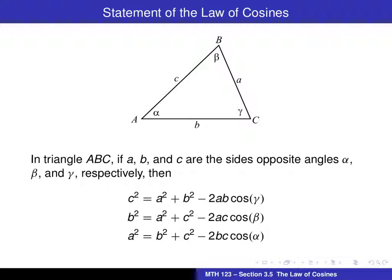So again, using our standard notation for triangles with angles alpha, beta, and gamma, and the corresponding sides a, b, and c, we get this statement here of the law of cosines in three different forms.